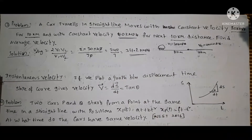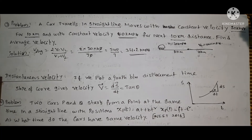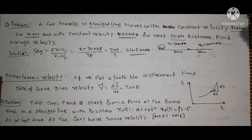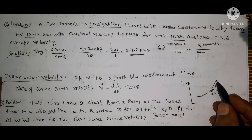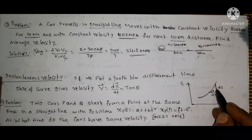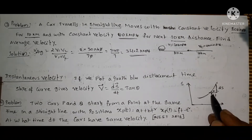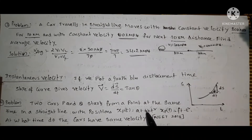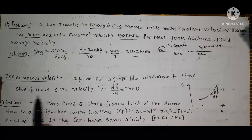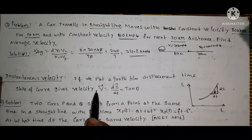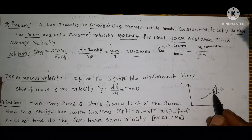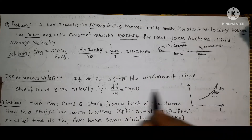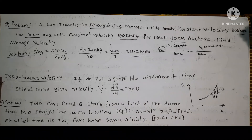Next: instantaneous velocity. The velocity of a particle at a particular instant of time is the instantaneous velocity. If you plot a displacement-time graph and the curve has a small displacement ds in time dt at angle theta, the slope of the curve gives the velocity. So V equals ds/dt, which equals tan theta.